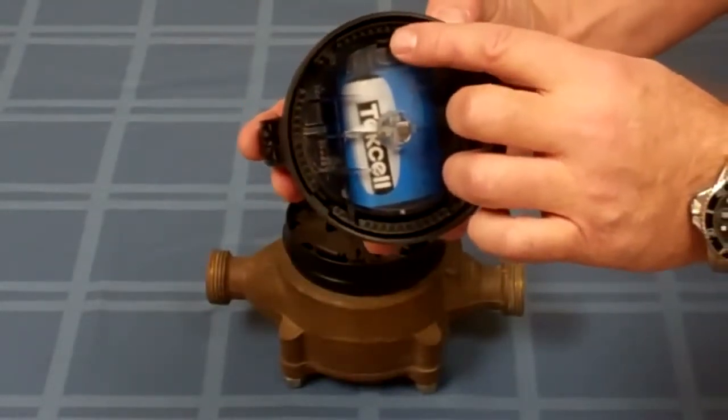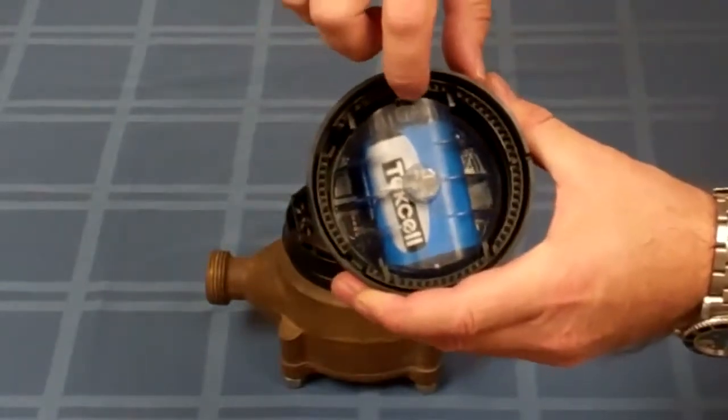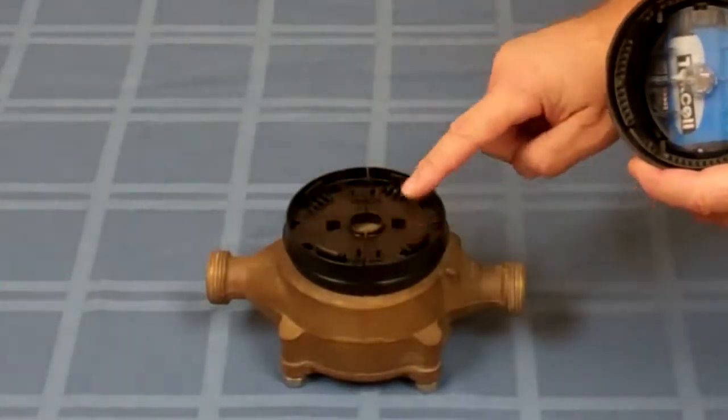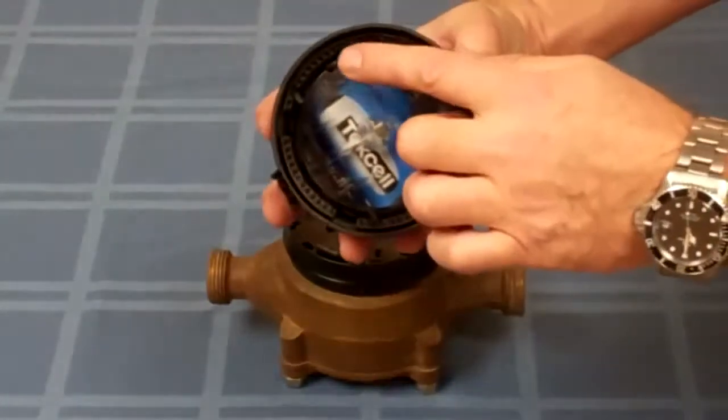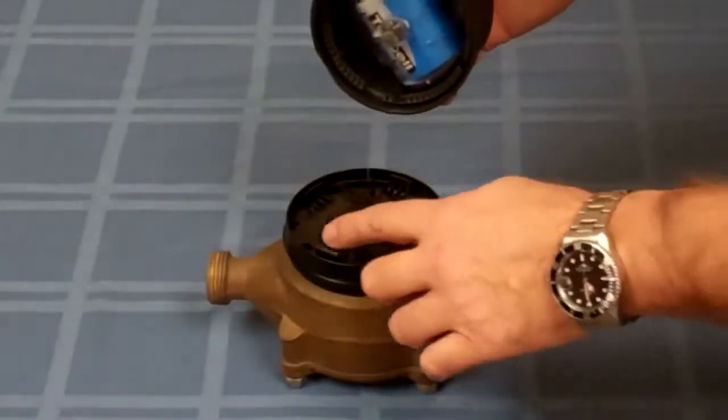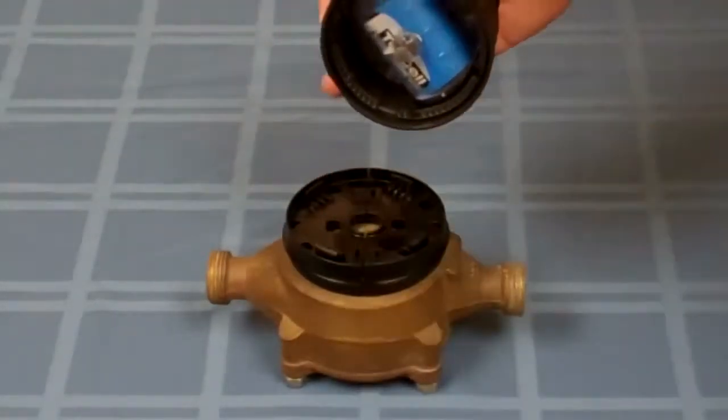The important thing to do here is to make sure this rubber grommet doesn't get snagged on one of these four posts on the meter when we install it. So what I'm going to do is make sure that grommet starts out in between any two of these posts.